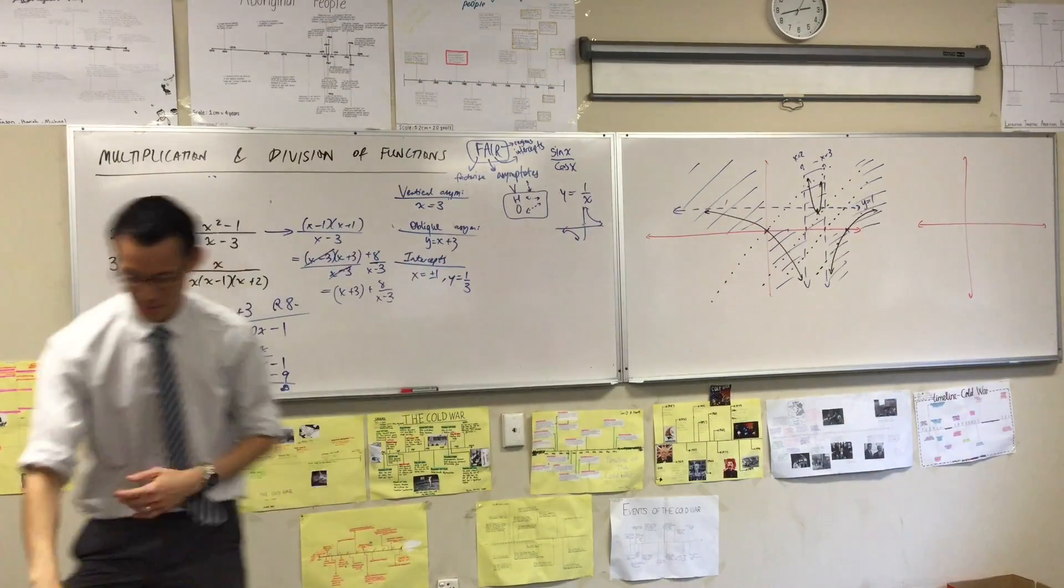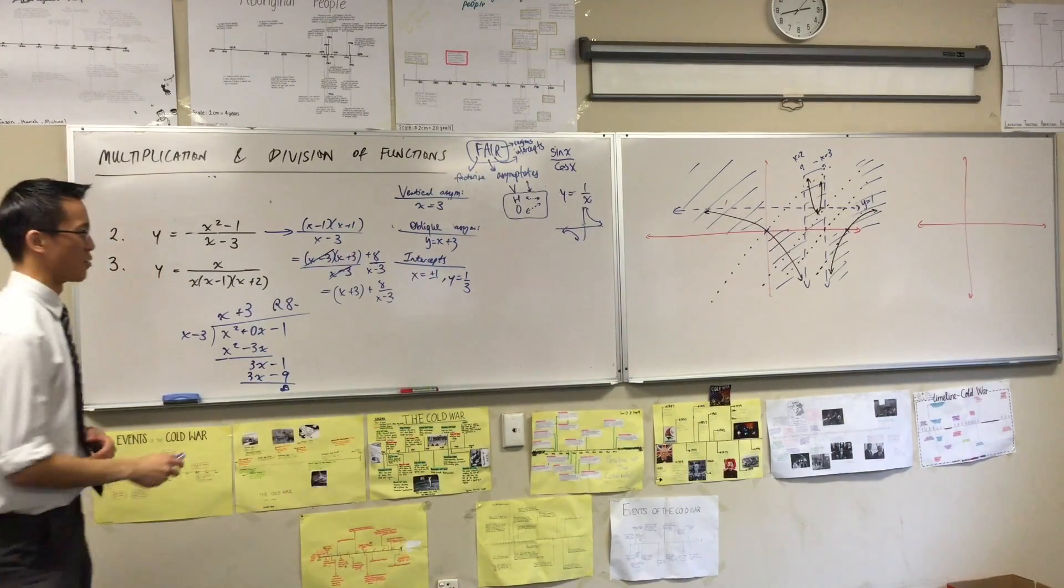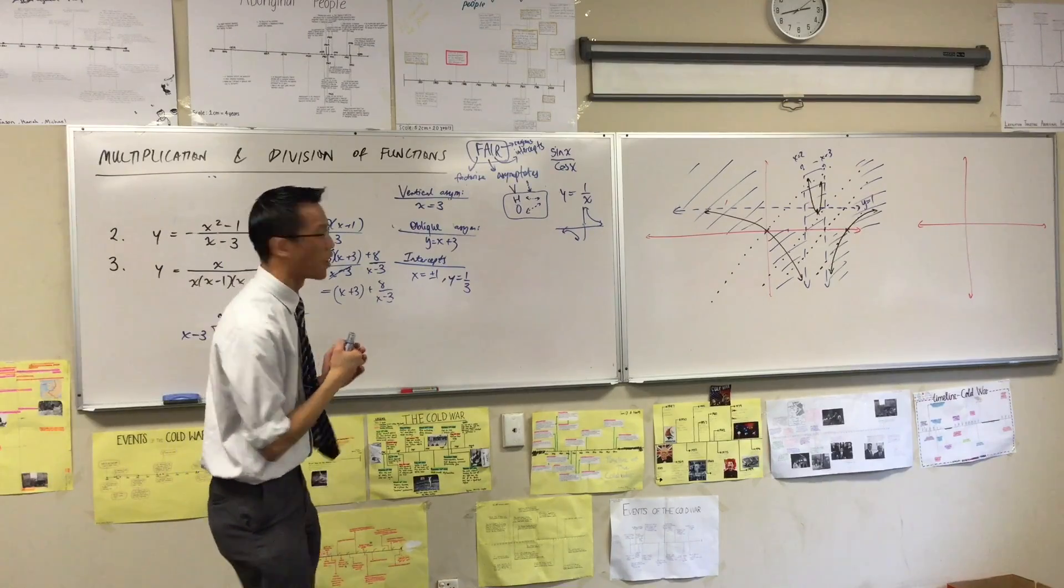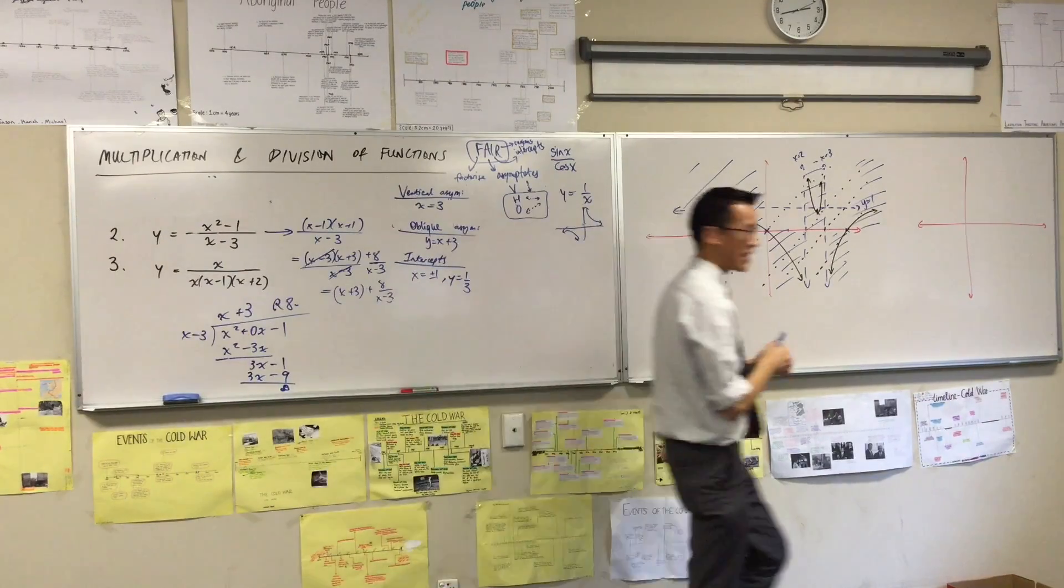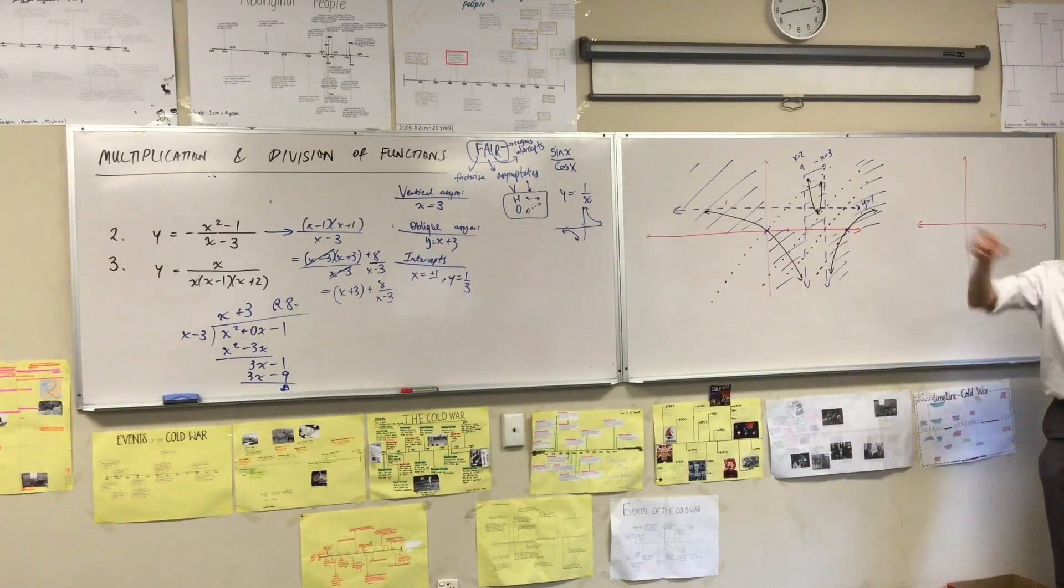And put some regions on. What am I going to put on here? I've got here some features to add. I've got a vertical asymptote.